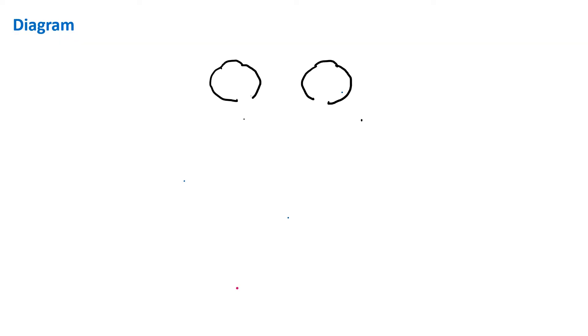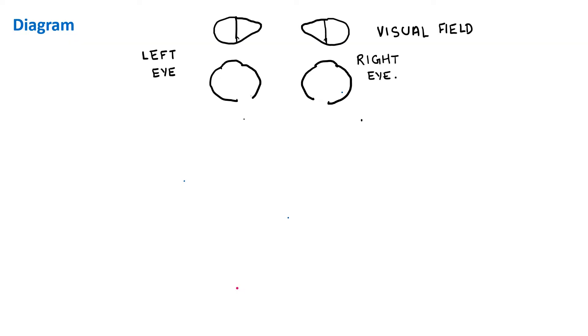When you are asked to draw the diagram of the visual pathway, you can start by drawing the two eyeballs and mark them as the left and the right type. You can also show the visual field of these eyes and then show the nasal and the temporal fibers.